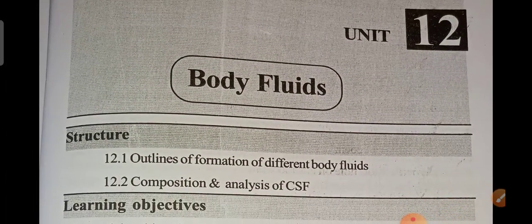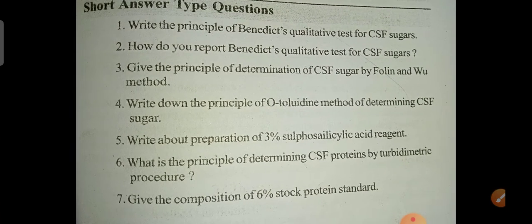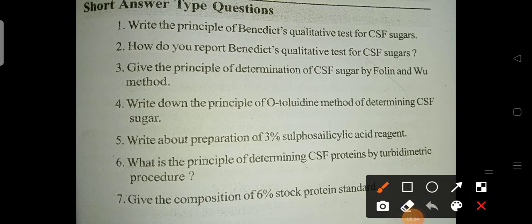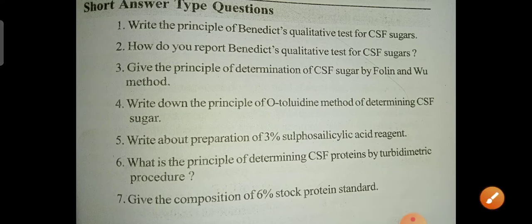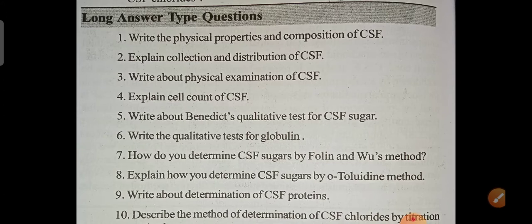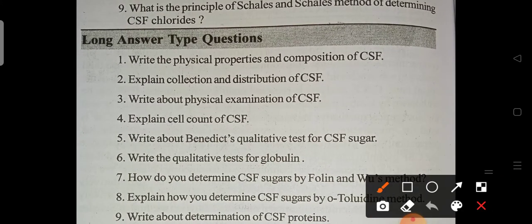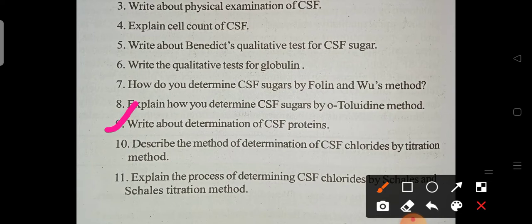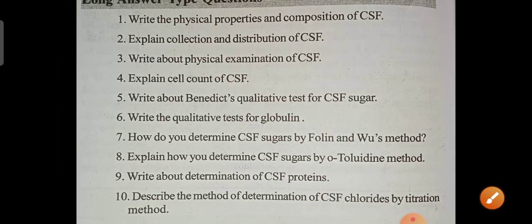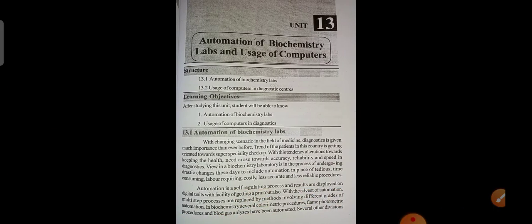Unit 12 is Body Fluids. General questions on CSF (cerebrospinal fluid) quality tests are important. Some important questions include: explain the composition and distribution of CSF, explain the cell count of CSF, determination of CSF proteins, and how to determine CSF sugars by the Folin and Wu method. There are not many critical questions in this unit but CSF-related questions may be asked.